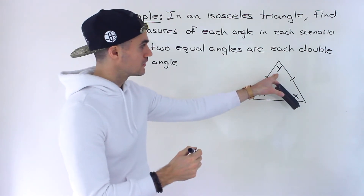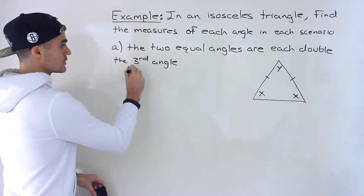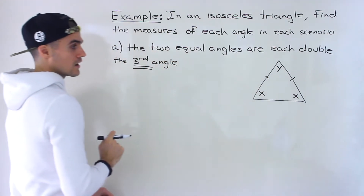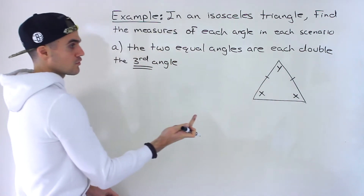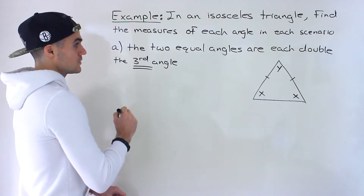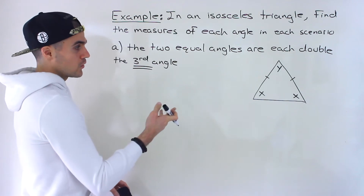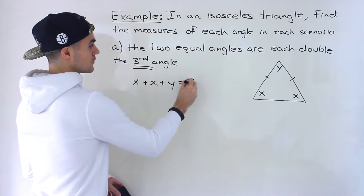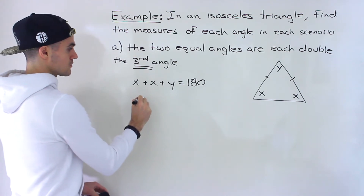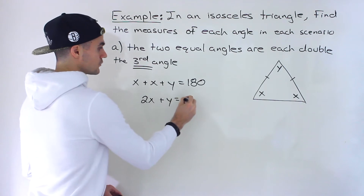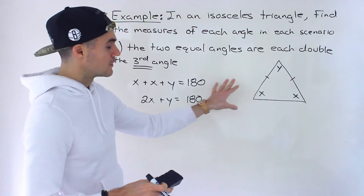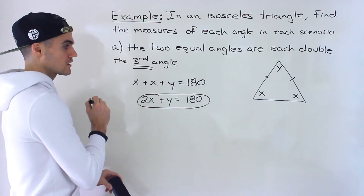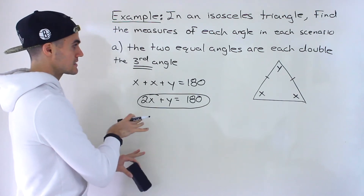That remaining angle — the one that's other than the two equal ones — is what I'm referring to when I say the third angle. It's the one that's not equal to the other two. In any triangle, the sum of all the angles is 180. So we can write x plus x plus y equals 180. Since those are like terms, we rewrite this as 2x plus y equals 180. This equation will be used for all three scenarios.